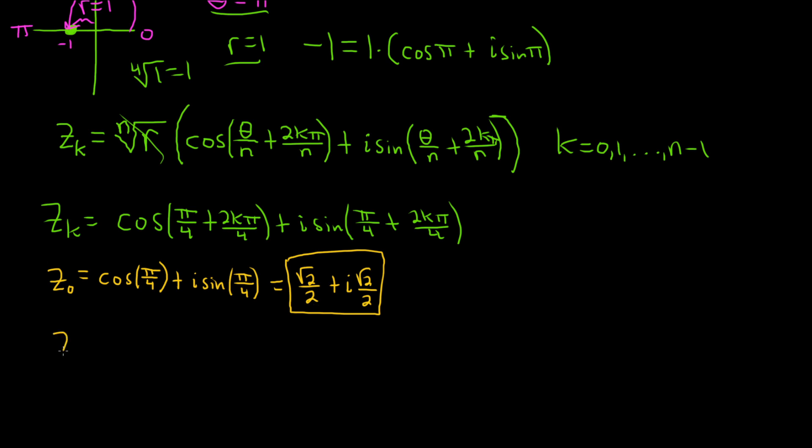Let's do another one. z sub 1 equals, let's see, cosine pi over 4. So now k is 1, so we just get plus 2 pi over 4 plus i sine. Going a little faster here - pi over 4 plus 2 pi over 4.